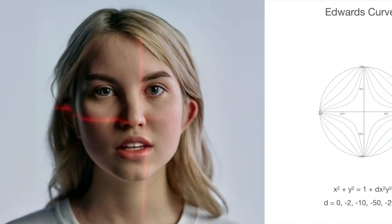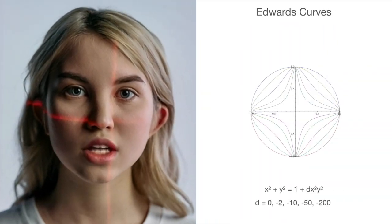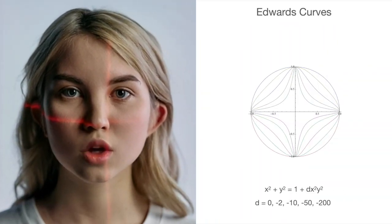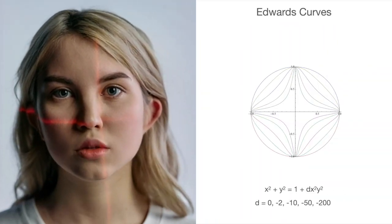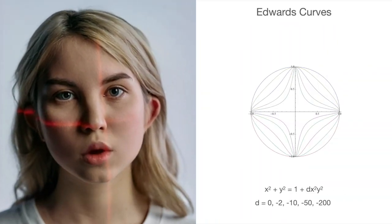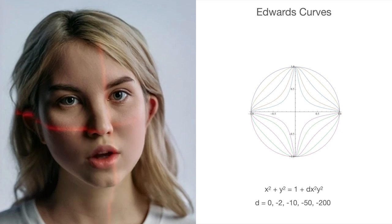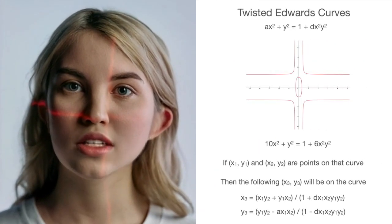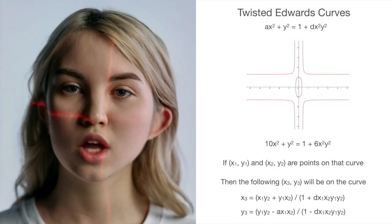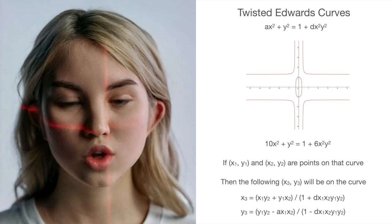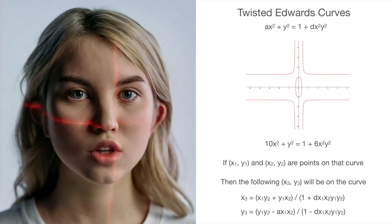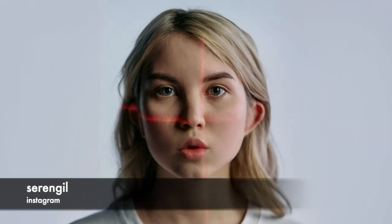At its core, EdDSA is based on elliptic curve cryptography, which involves mathematical operations on points of a special curve. EdDSA adopts elliptic curves in twisted Edwards form, or shortly, twisted Edwards curves. Let's go through the main steps of EdDSA in a step-by-step manner to better understand how it works.